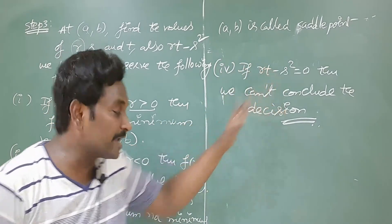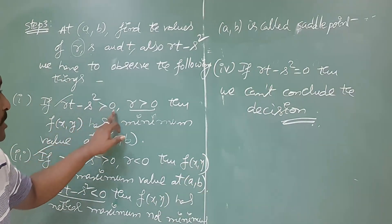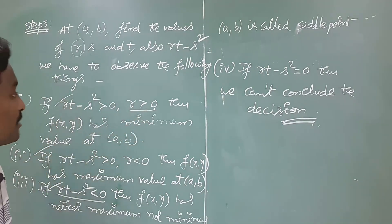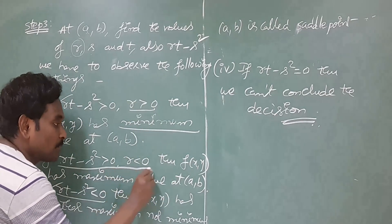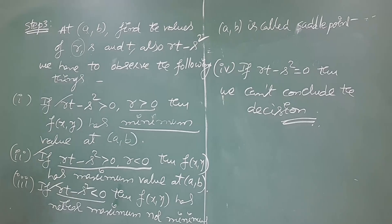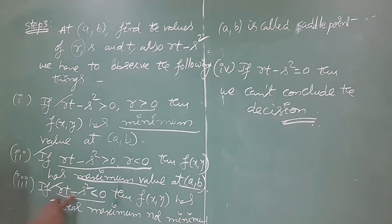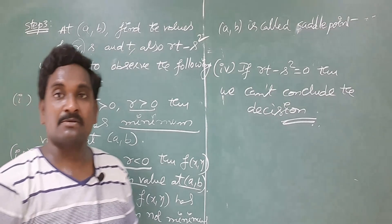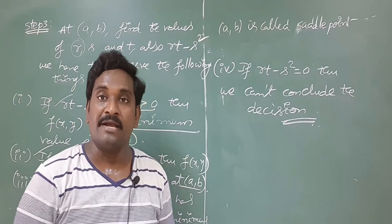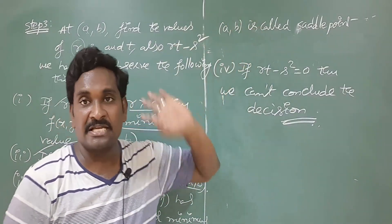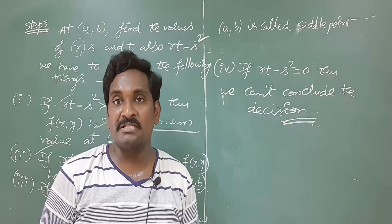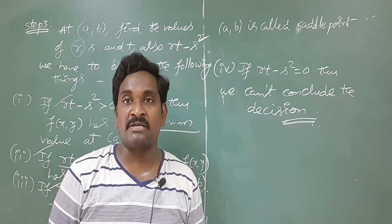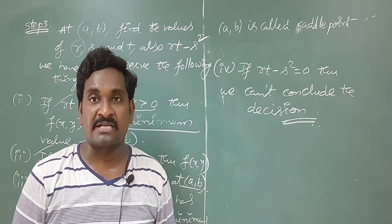In most problems, you may get RT − S² positive and R also positive — in that case, conclude that the given function has a minimum. Sometimes you may get RT − S² positive and R negative — in such cases the function has a maximum at that stationary point. If RT − S² is negative, the function has neither maximum nor minimum at that point, and (a, b) is called a saddle point. This is the complete procedure to find the maximum or minimum of a function f of x comma y.